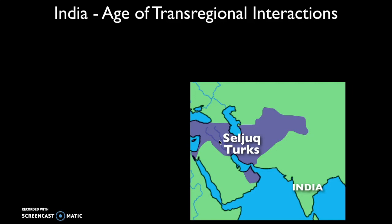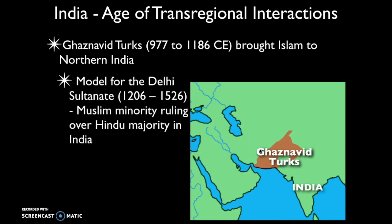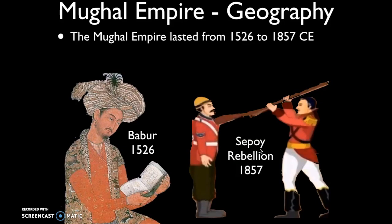In Period 3, Islam spread east into the Indian subcontinent, initially by way of the Ghaznavid Turks who brought Islam to northern India, and later through the Delhi Sultanate. The Delhi Sultanate established the model for India where a Muslim minority ruled over a Hindu majority — a pattern we will also see in Period 4 with the Mughal Empire.